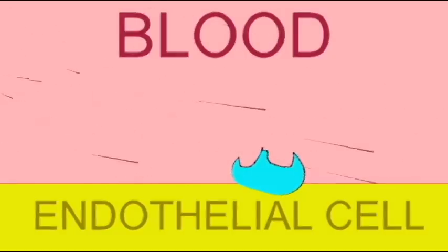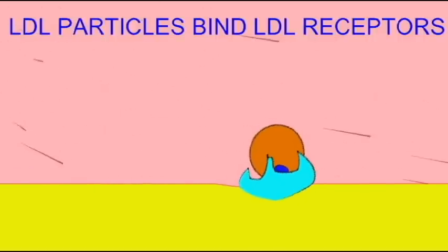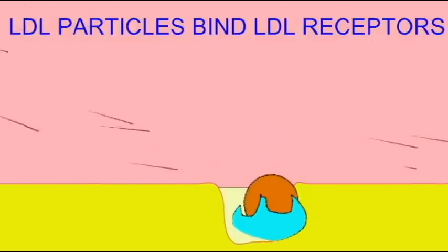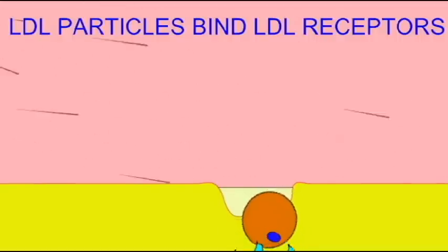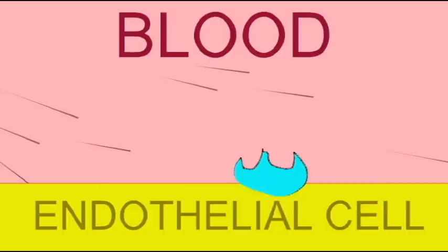The LDL particles pass through the blood and will eventually bind to LDL receptors on the endothelial cell linings. Most cells of your body have LDL receptors, since cholesterol is essential for all cells — it is, for example, a component of the cell membrane. The LDLs contain cholesterol which passes from the blood through the endothelial cells and can reach the cells of your body by binding to these LDL receptors.